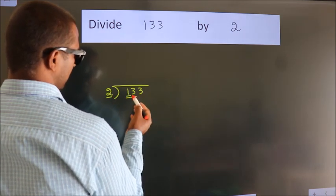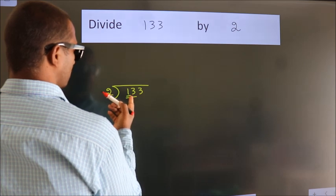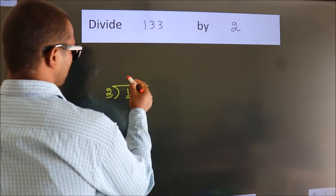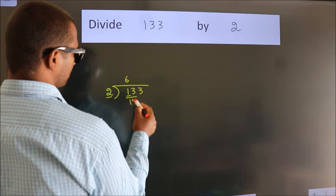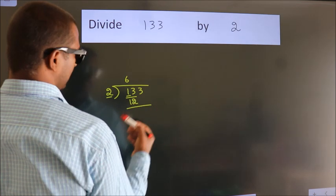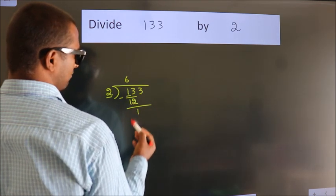So we should take 2 numbers, 13. A number close to 13 in 2 table is 2, 6, 12. Now, we should subtract. We get 1.